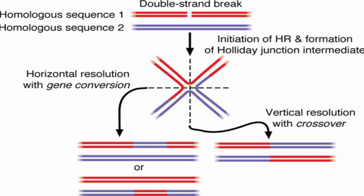The D-loop structure can migrate along the homologous DNA, allowing more extensive exchange of genetic material and facilitating the repair process. As branch migration progresses, Holliday junctions can form, representing a point of exchange between the two DNA molecules. These junctions can be resolved in different ways, ultimately leading to the repair of the DSB. Depending on how the Holliday junctions are resolved, the repair process can result in the exchange of genetic material between the two DNA molecules, or it can be resolved without exchange to repair the DSB accurately.